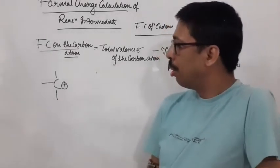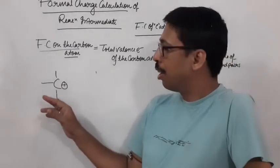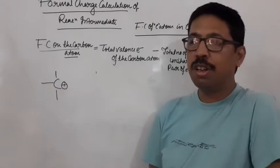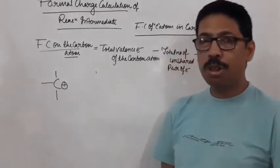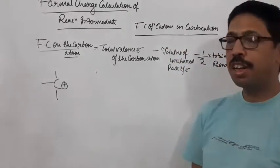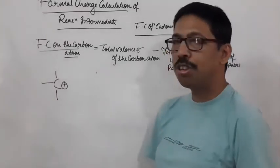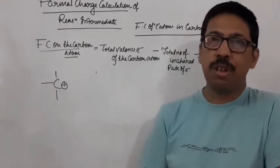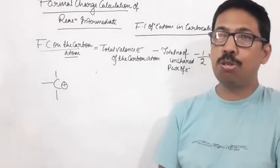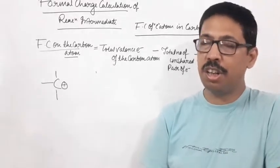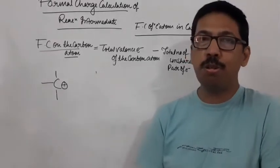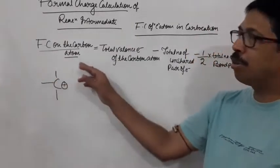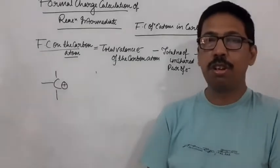This central carbon does not have octet configuration. This denotes electron deficiency, plus charge. But one unit positive charge, how to calculate? By using formal charge calculation method.